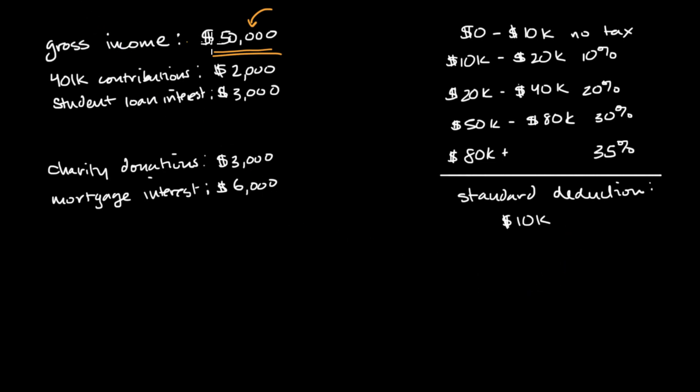So going back to the case study of this person in this taxable year, gross income $50,000. And then they have what we're calling above the line deductions. And above the line deductions, you can view these as deductions to your gross income that you can make no matter what. The history of why it's called above the line is it's the first form of the typical tax form. You can make these types of deductions no matter what. This isn't an exhaustive list, but these are ones that are actually reasonably typical.